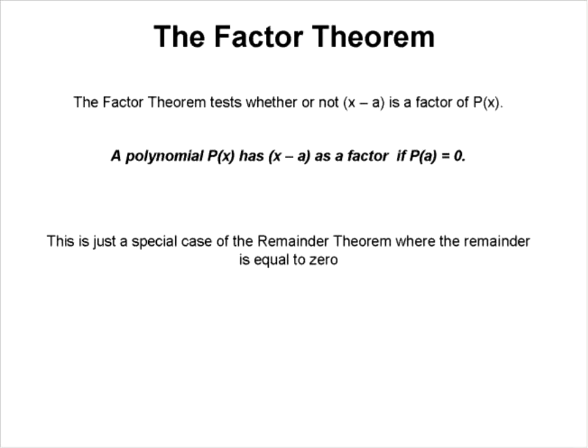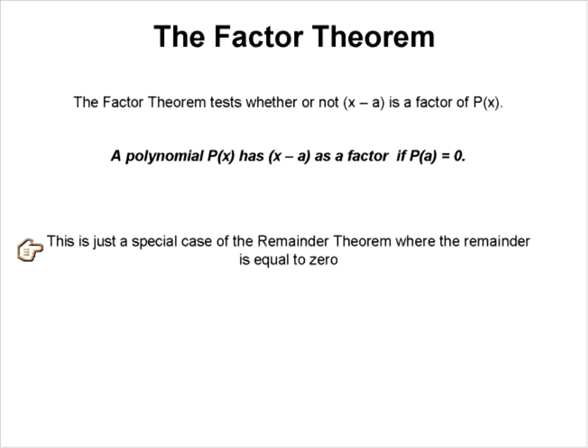This is just a lot of math mumbo-jumbo confusing language to tell you that if you plug the A value into the polynomial and you get zero, that means X minus A is a factor. This is just a special case of the remainder theorem where we're trying to find out what values give a remainder equal to zero — it's just an extension of the remainder theorem where we're trying to find a remainder equal to zero.